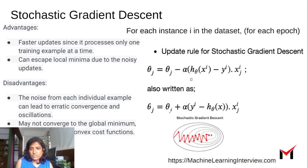Now what are the disadvantages? The noisiness from each individual example can lead to erratic convergence and oscillations. So the convergence properties are much more complex for stochastic gradient descent.